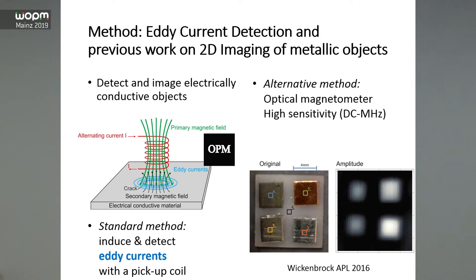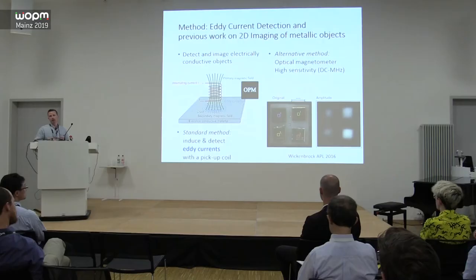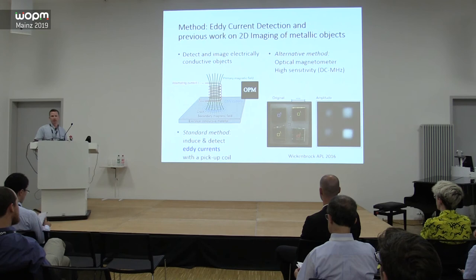There's data by Anne Wickenbock and others where they scanned different metal plates — copper, titanium, aluminum, and copper-nickel — around and recorded images with an optically pumped magnetometer. They see nice edges and the shape of the objects, with different brightness levels — more conductive objects appear brighter — allowing inference of conductivity and material properties.